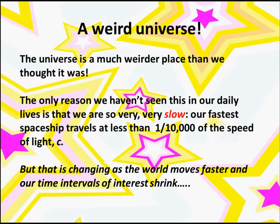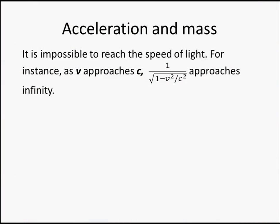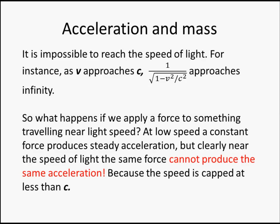So, as the world moves faster and our time intervals of interest shrink, relativity is going to become more important to us. It is impossible to go to the speed of light. There are various ways you can prove it. But intuitively, you can see that if that factor 1 over 1 minus v squared over c squared becomes imaginary, going faster than light is just not really an option. So, if nothing can go faster than light, what happens if we keep pushing something? At low speed, if you know Newton's laws, a force produces a constant acceleration. But clearly, once you get near the speed of light, the same force can't produce the same acceleration, because you can't accelerate to the speed of light, because the speed is capped at something less than c.